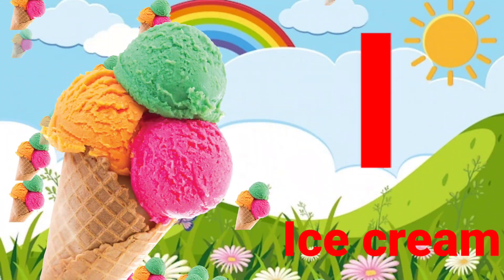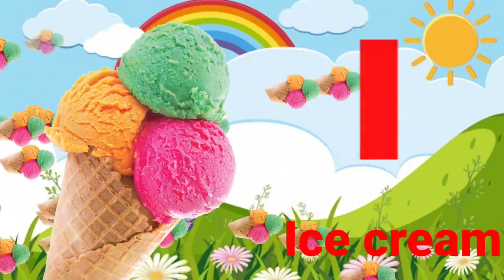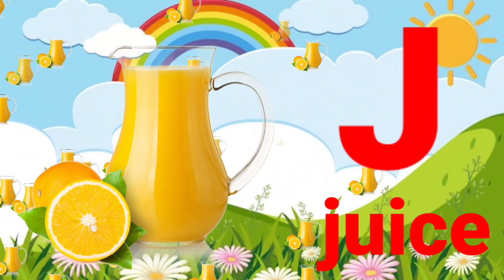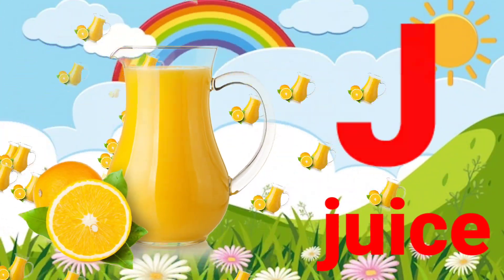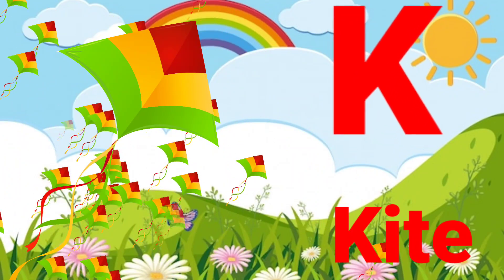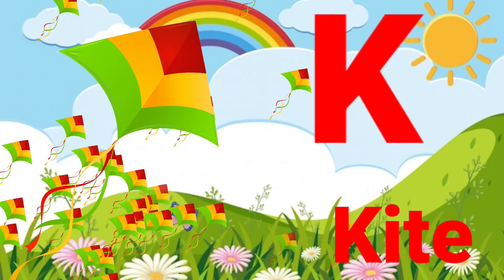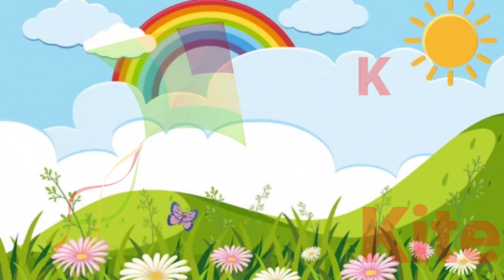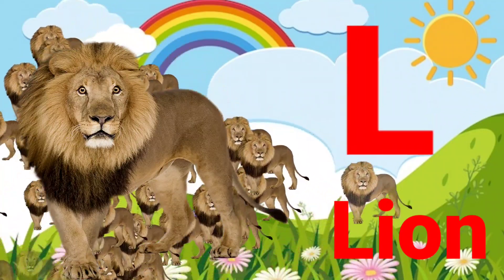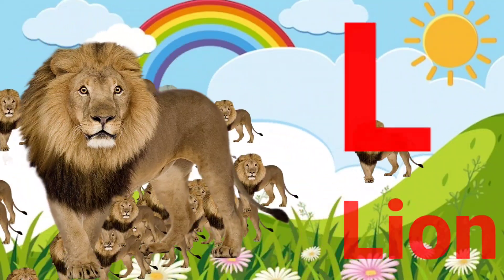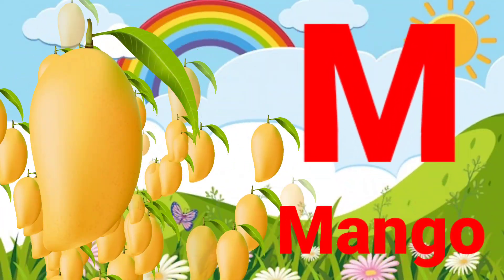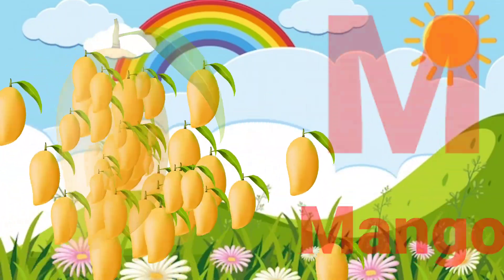I. I for ice cream. J. J for juice. K. K for kite. L. L for lion. M. M for mango.